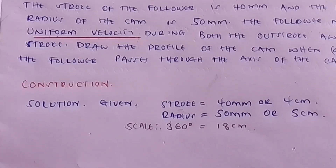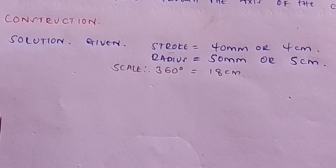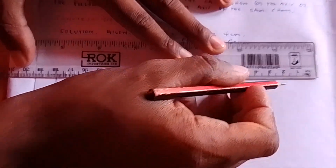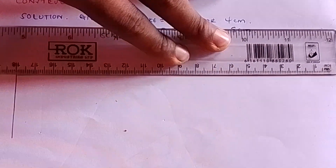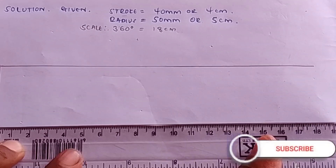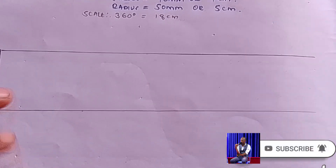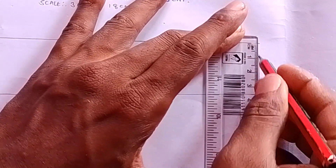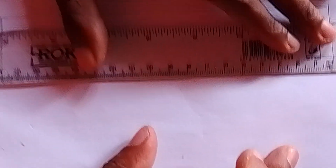With our scale established, from the reference point draw a straight line of 18 centimeters along the top, then duplicate it along the bottom. Now using that scale, we convert 60 degrees for the outstroke: 60 times 18 divided by 360 equals 3 centimeters. We have now converted 60 degrees into centimeters so we can use our ruler to draw the graph.